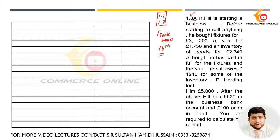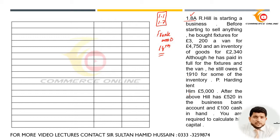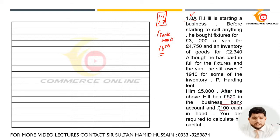R Hill is starting a business. Before starting to sell anything, he bought fixtures for £3,200, a van for £4,750, and an inventory of goods for £2,340. Although he has paid in full for the fixtures and the van, he still owes £1,910 for some of the inventory. P. Harding gave him a loan of £5,000. After the above, Hill has £520 in the business bank account and £100 cash in hand. You are required to calculate his capital.